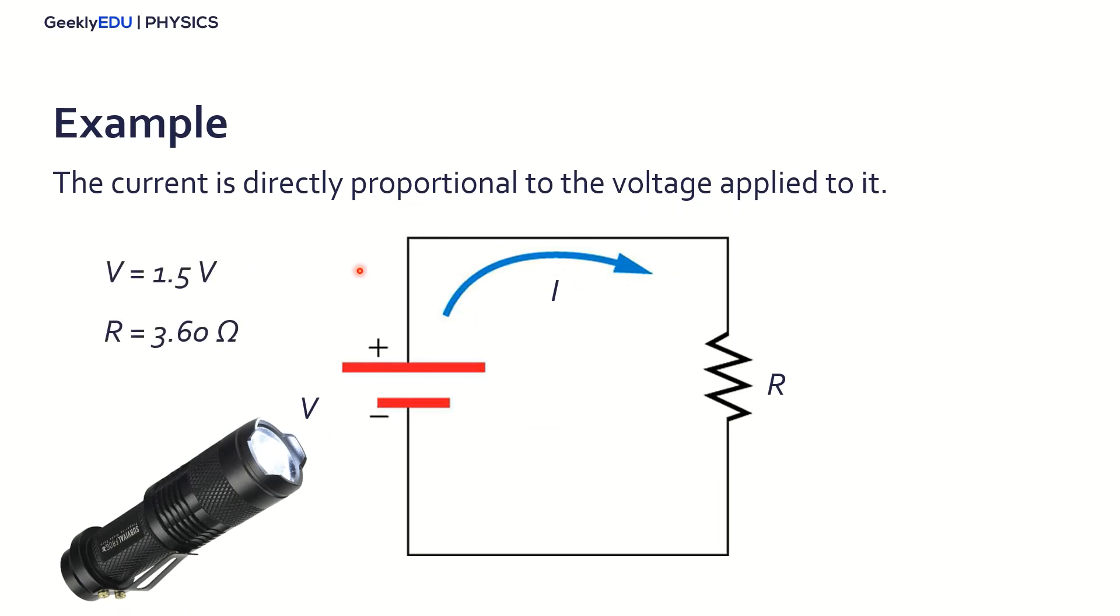Let's suppose that the voltage of the battery is 1.5V, and the resistance of the light here, the flashlight, is 3.6 ohms. So we want to calculate the current. We can just apply Ohm's Law for it. So we have the voltage, the resistance, so the electric current in this circuit here is actually 0.42A.